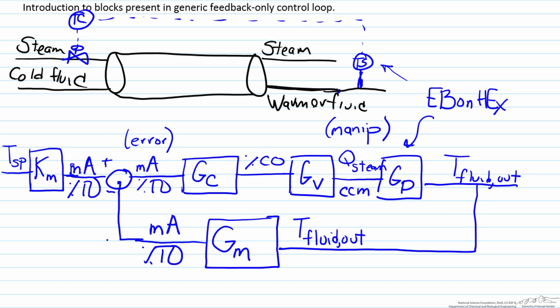It will also give an idea of not only the gain, so for example a change in one CCM of steam causes a two degrees Celsius change in the fluid temperature, but also some time dynamics, some understanding of how it will get there. Will it happen instantaneously or will it happen over some set period of time. That is the information we can get from the process transfer function.